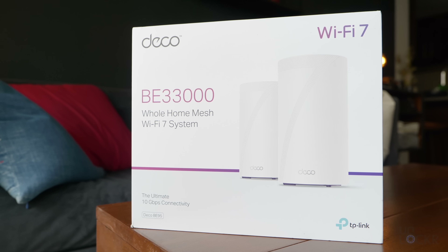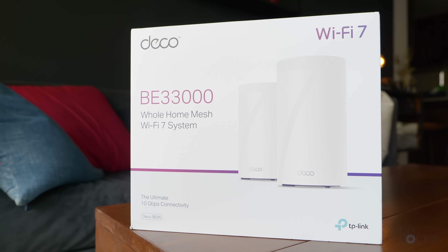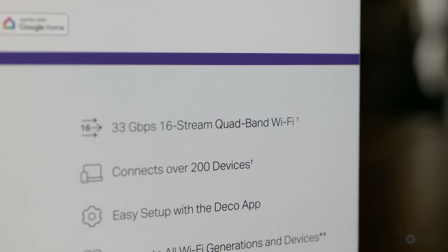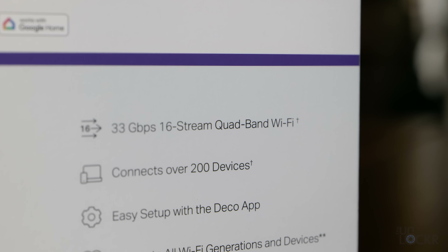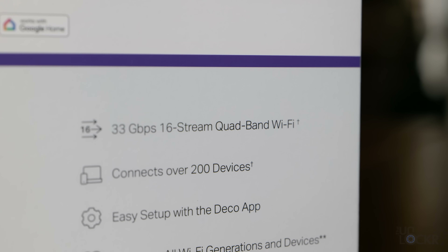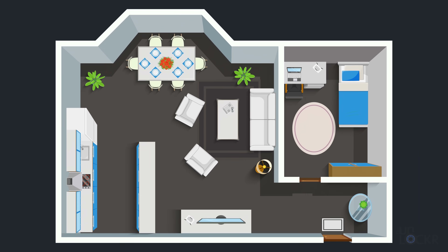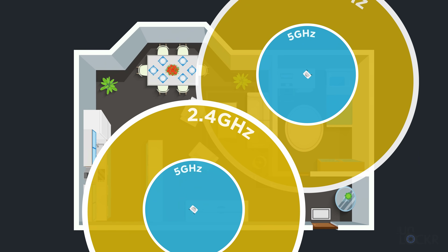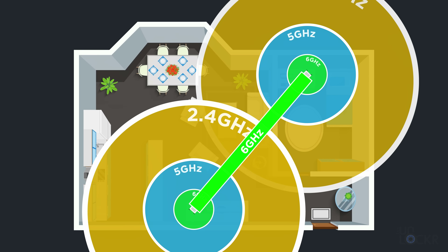The router used in this video is the TP-Link Deco BE33000 with Qualcomm's Networking Pro 1620 platform inside, which enables quad-band Wi-Fi 7 instead of just tri-band. That means 2.4 GHz, 5 GHz, and two 6 GHz channels — one can be used as a dedicated backhaul between the two mesh nodes for a super fast connection, while still having all three bands available from each node for client devices.